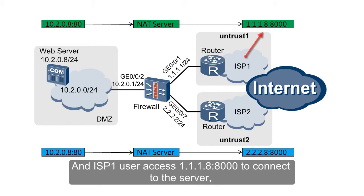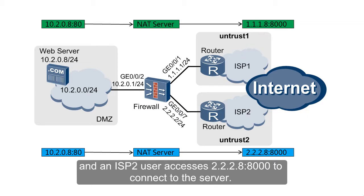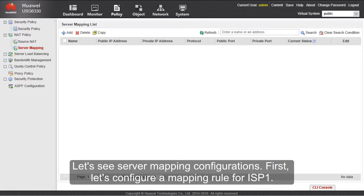An ISP1 user accesses 1.1.1.8:8000 to connect to the server, and an ISP2 user accesses 2.2.2.8:8000 to connect to the server. Let's see the server mapping configurations.